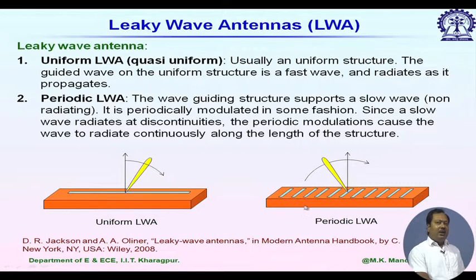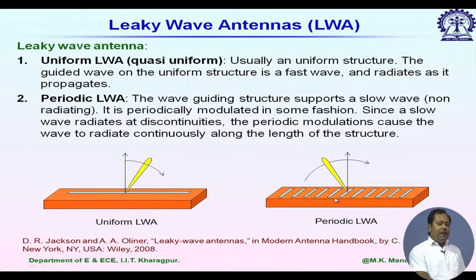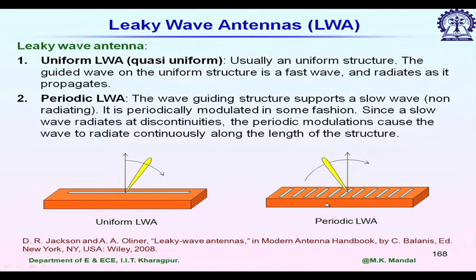The second category is the periodic leaky wave antenna. For the periodic leaky wave antenna, the guided mode is usually a slow wave mode. Even for a slow wave mode, we can have power leakage and effective radiation. However, radiation from a periodic structure comes only from the first Floquet mode that is a fast wave. Any mode propagating along a periodic structure is a summation of infinite Floquet modes, and at least one of these will be a fast wave from which radiation occurs.